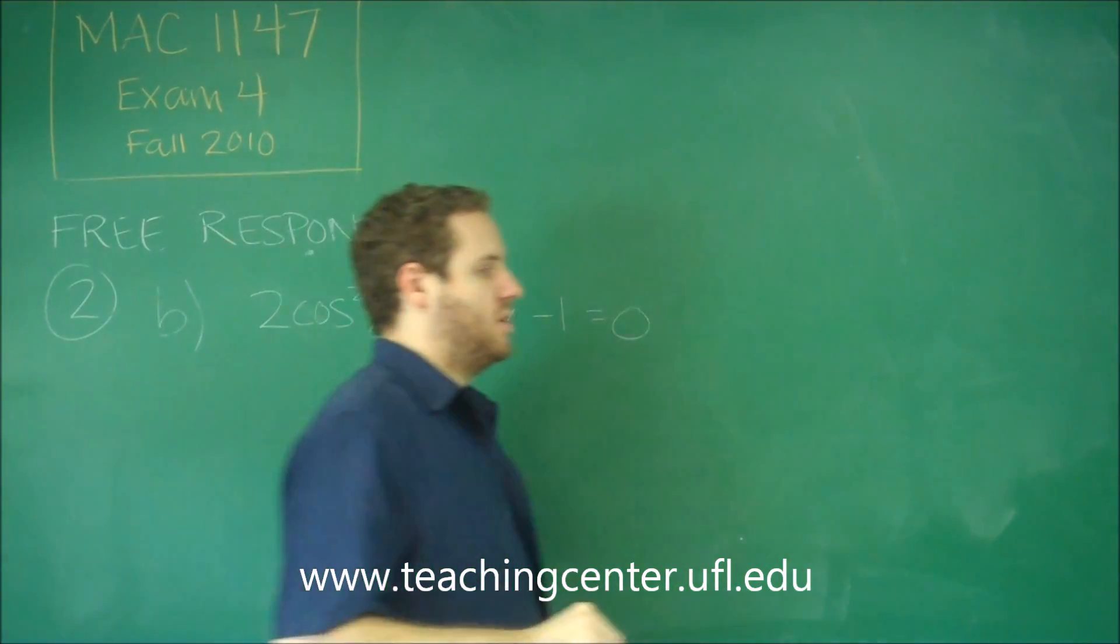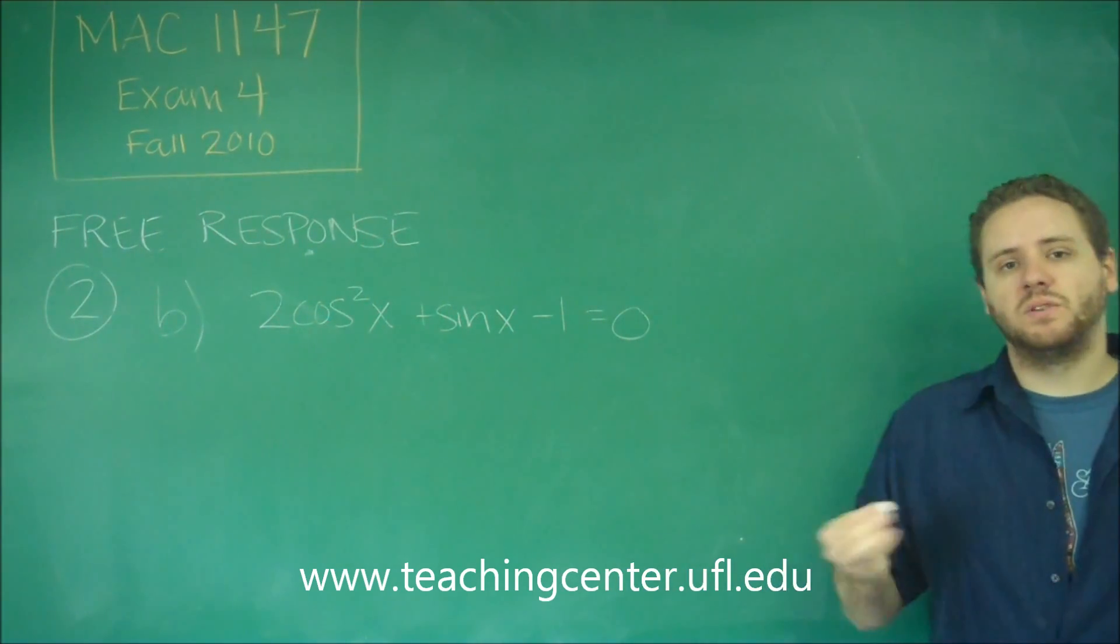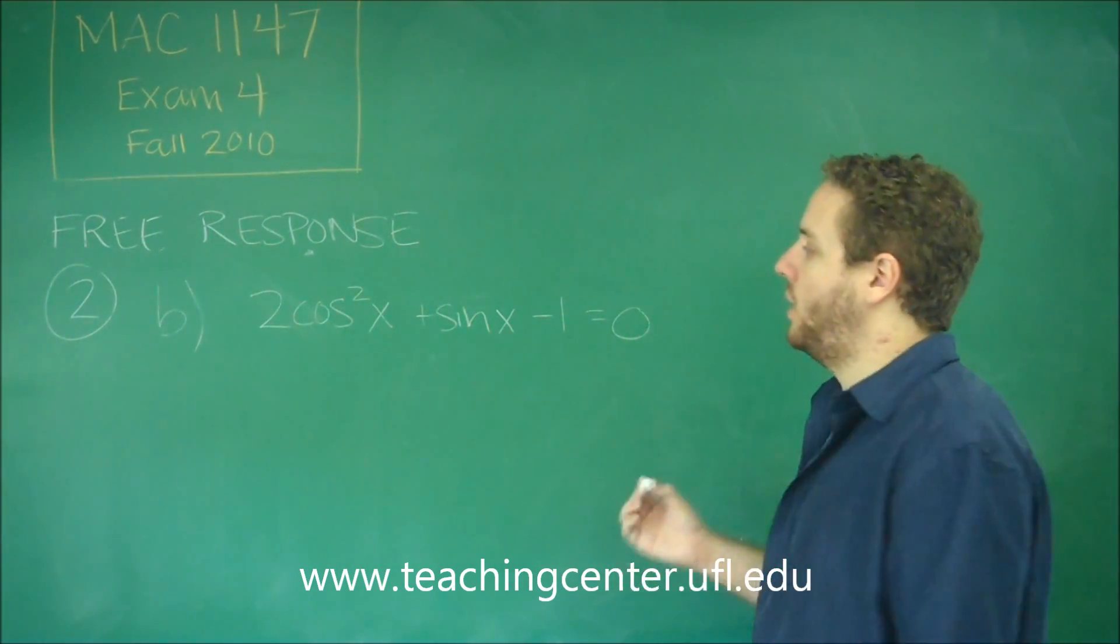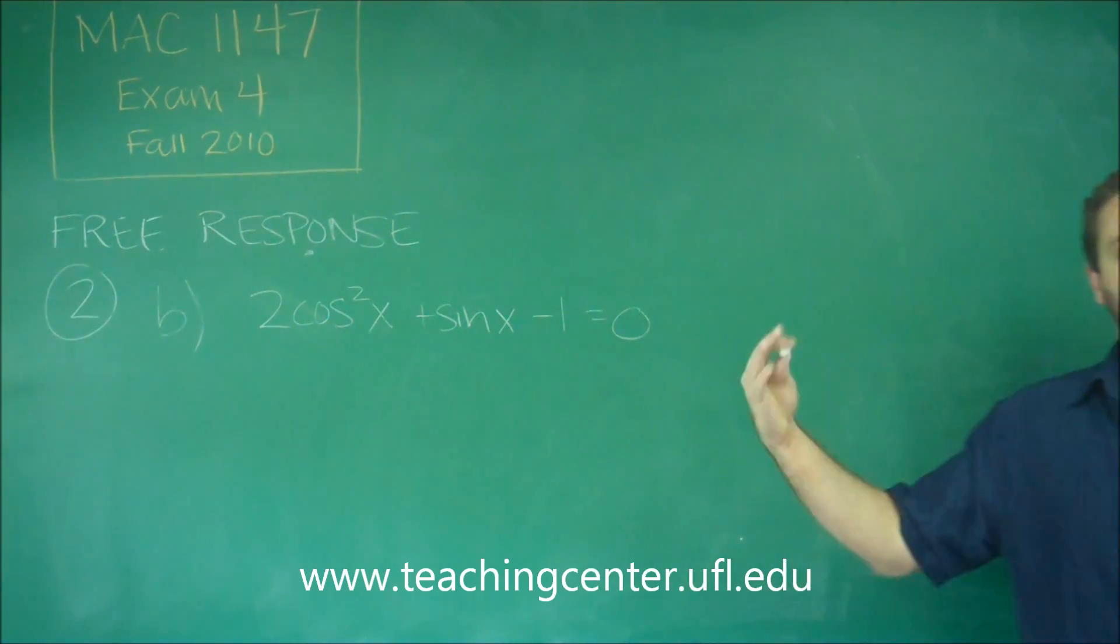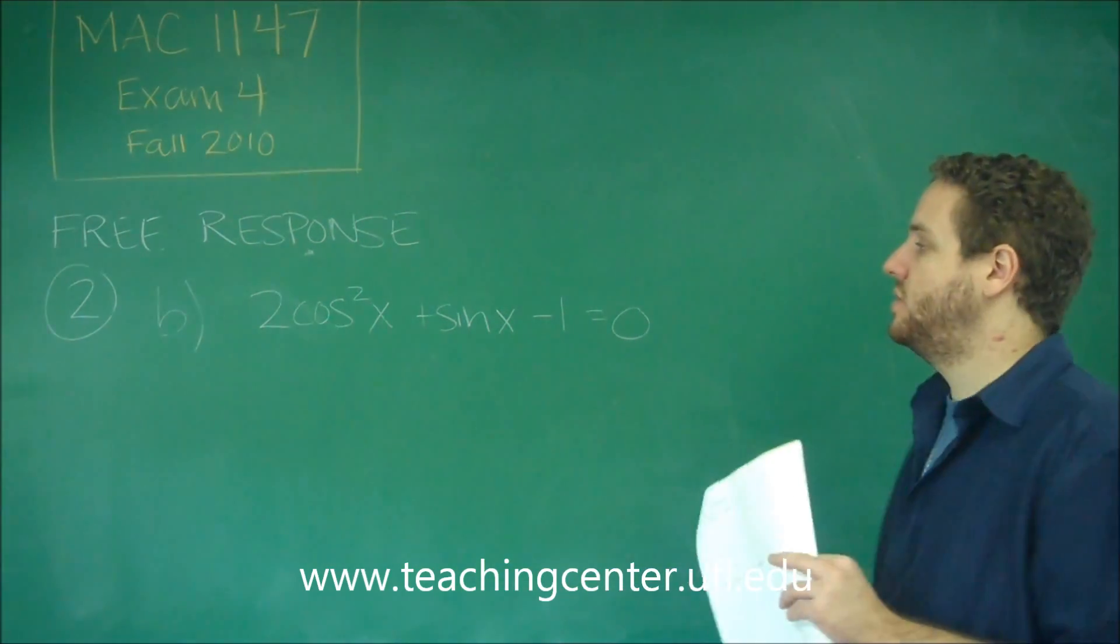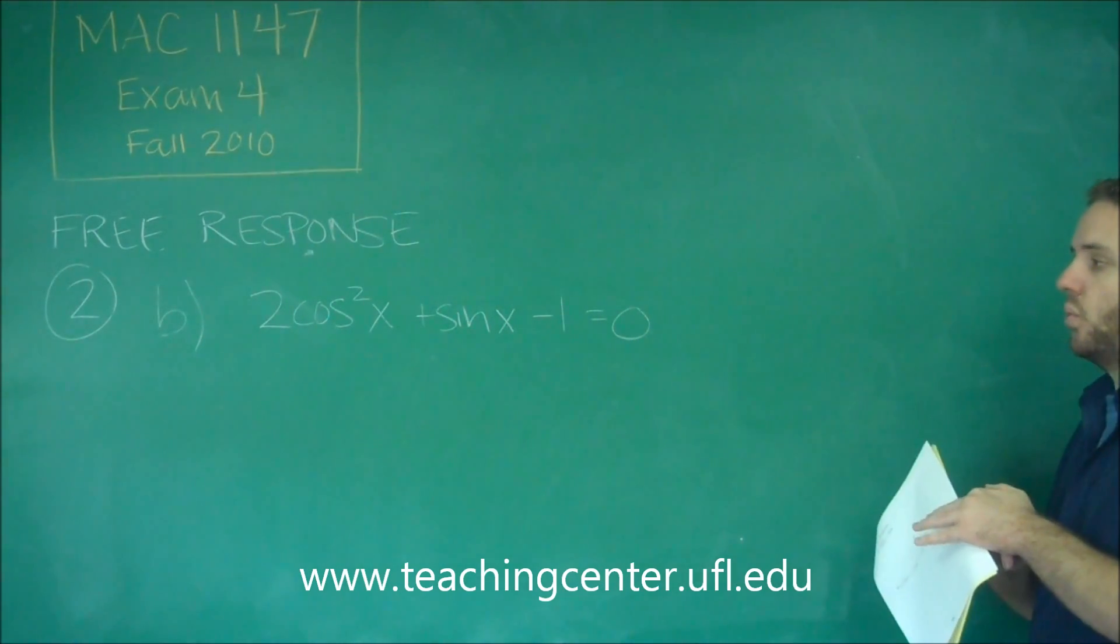We need to be in terms of one trig function, because you can only solve an equation if you can boil it down to cosine x equals something, or sine x equals something, or tangent x equals something. We have a cosine and a sine, that's not good. So what you need to do here is convert them all to one or the other.